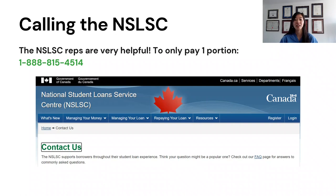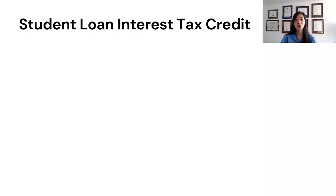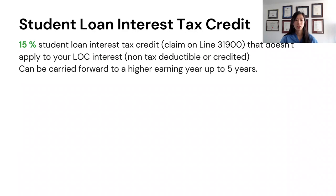How do you pay just one portion and not the other? Currently on the NSLSC website I didn't see a way to do this, but I would give the NSLSC reps a call — I've included their number here. They're really friendly and helpful. Before you do all that, also consider that the interest on your student loans comes with a 15% federal tax credit, which you can claim on line 31900. That tax credit helps reduce the amount of taxes you owe, but note it doesn't apply to line of credit interest — only to student loan interest.